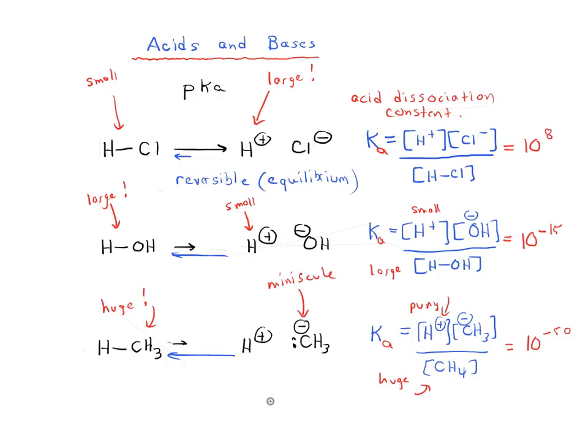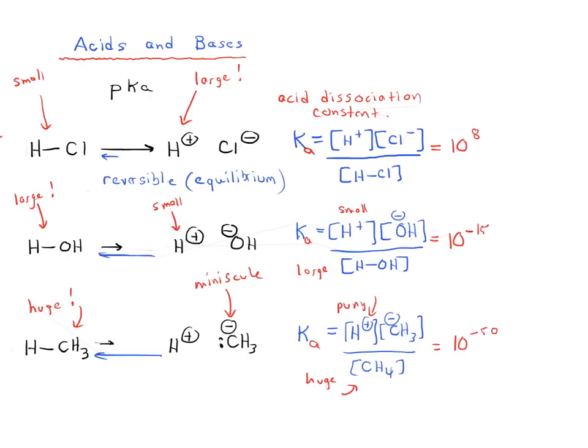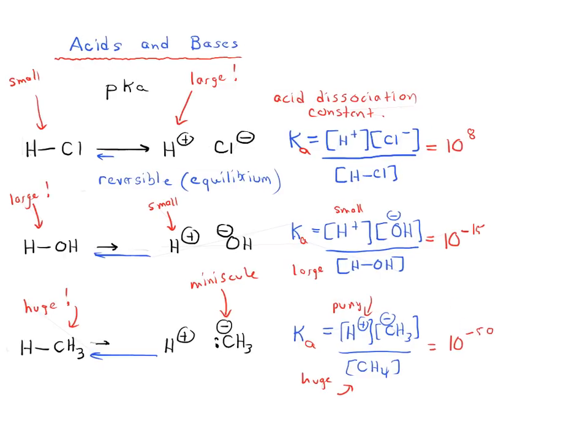Now, so this is a strong acid, just to review. This is a weak acid. And you see our strong acid has a huge acid dissociation constant. Our weak acid has a very, very small acid dissociation constant. Now, we actually really don't like dealing with exponents and we can avoid it. So it would be handy if we could take the log of the Ka.